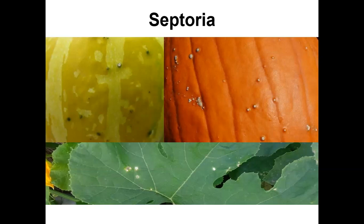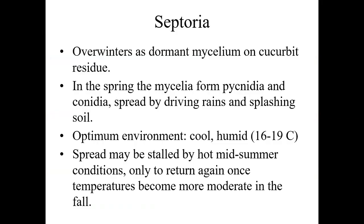A small amount of Septoria on the surface of a pumpkin or squash is not going to be a problem — it will still be marketable. But if you get really large amounts of lesions on the fruit, you're going to potentially lose marketability. The nice thing with this disease, if you can have a nice thing with a disease, is that it really doesn't cause progressive rot. Those lesions will stay the same size, they're quite firm, and the integrity of the fruit is still good. Septoria overwinters as dormant mycelium — the fungal hyphae — on cucurbit residue in the soil. In the spring, they'll form pycnidia and conidia, which are spread by driving rains and splashing soil, and can travel short distances from plant to plant.